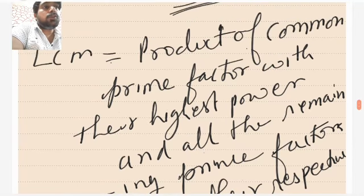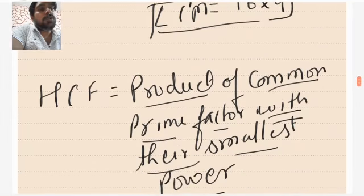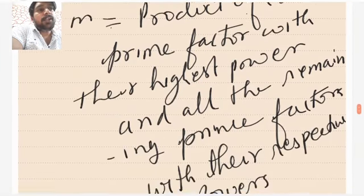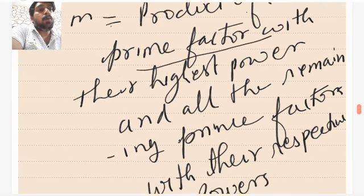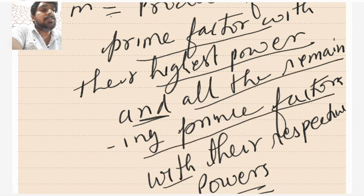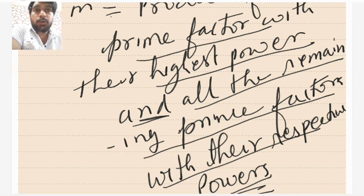So to find out HCF, you have to find the product of the prime factors with their smallest powers. And to find out LCM, you have to find the product of common prime factors with their highest power, and multiply it by all the remaining prime factors with their respective powers. I hope this was clear, and now you can find out the HCF and LCM of any numbers.